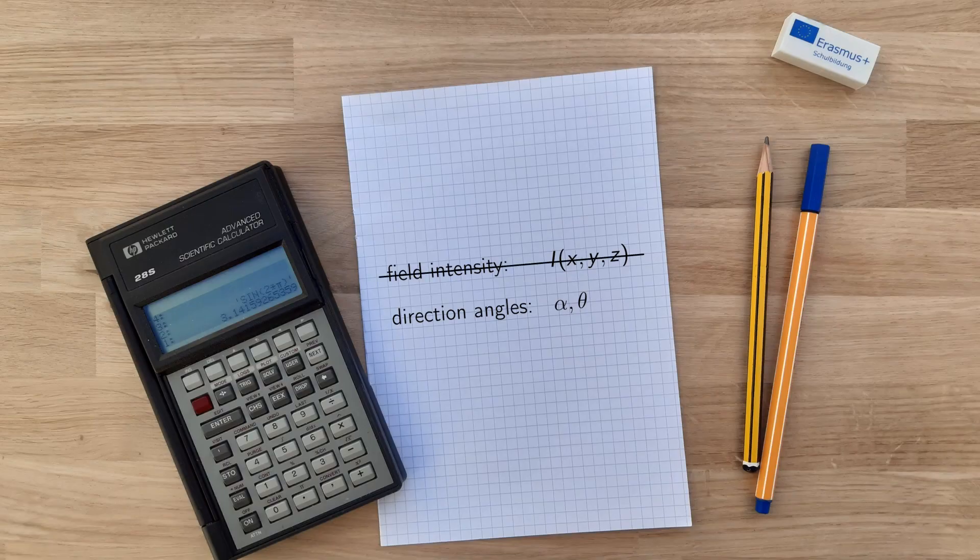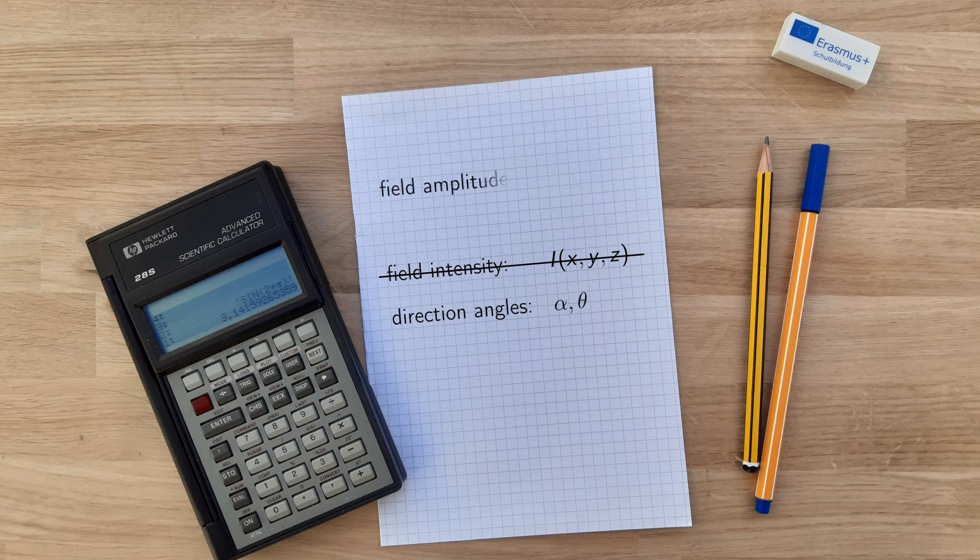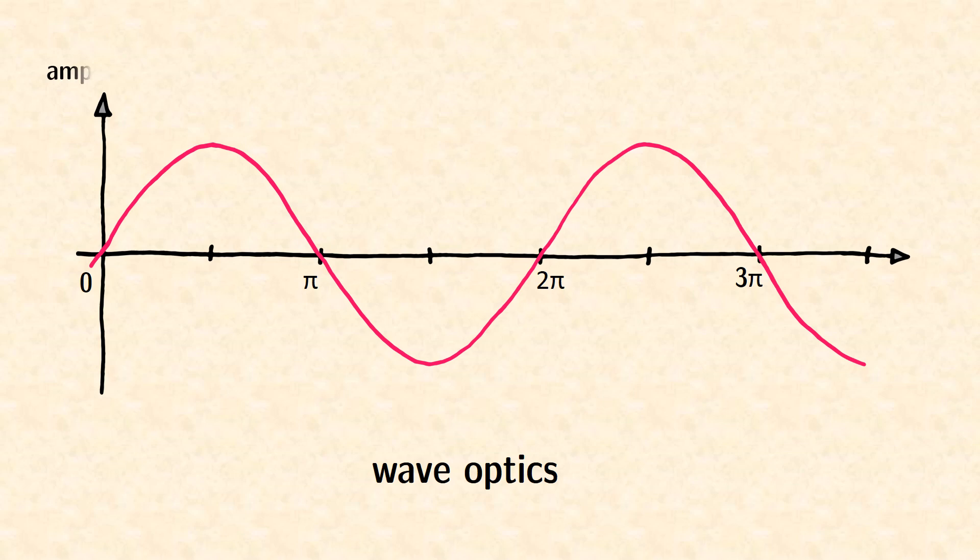Instead of intensity, we use field amplitudes and phases for our description. Light is an electromagnetic wave and phase is the key parameter. This perspective is in fact a very fundamental one.